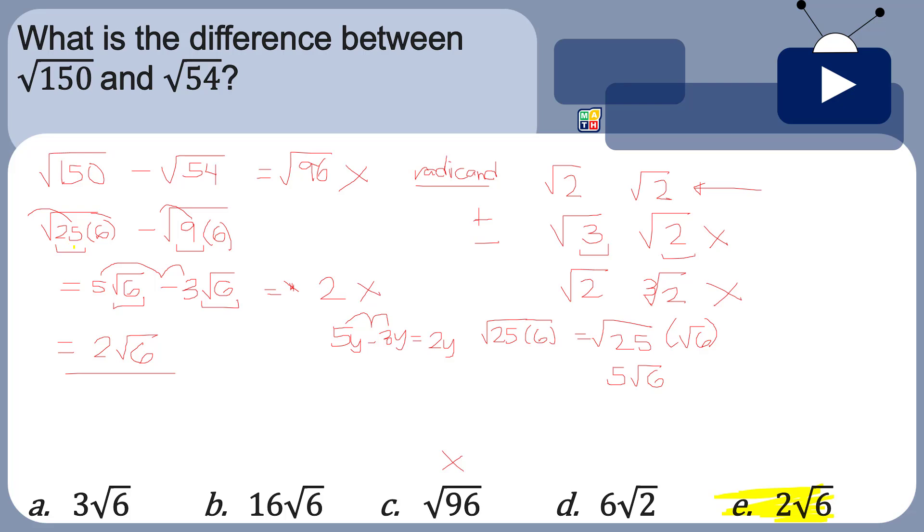So the difference between square root of 150 and square root of 54 is not square root of 96. That's not possible. Make sure you have the same radicand by doing this process. What if after this they still don't have the same radicand? Then we stop here. But since we have the same radicand now, when we subtract, we retain that radical expression and operate only the numbers outside. 5 minus 3 is 2. That is why the answer here is 2 square root of 6.